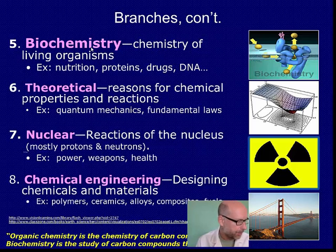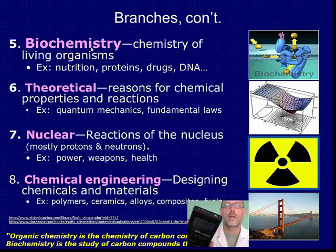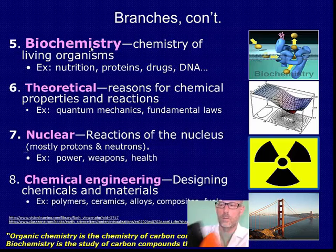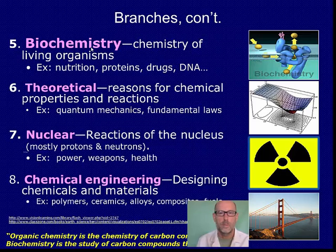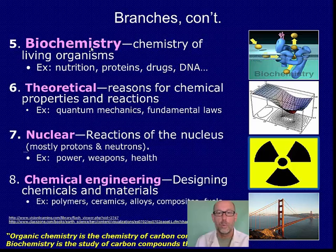The next is nuclear chemistry. If I take this Geiger counter and put it next to this fiesta ware plate, we can hear there's lots of radiation being given off. That radiation is coming from the nucleus of some atoms in the plate, which has protons and neutrons but not electrons. Nuclear chemistry is important when we talk about nuclear power, nuclear weapons, and health — for example, how we use radiation to try to rid the body of cancer.